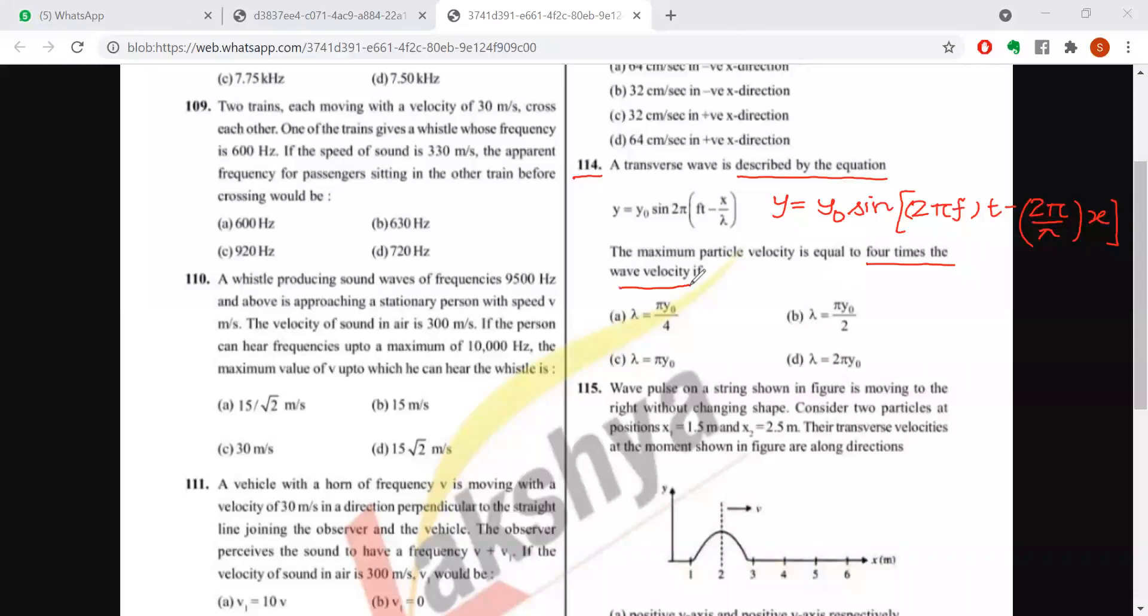Now maximum particle velocity - this is our amplitude, the coefficient of time is our omega. Maximum particle velocity is a*omega, you know that. It is given as four times wave velocity.